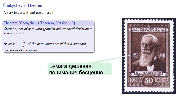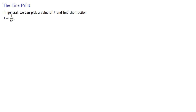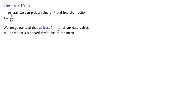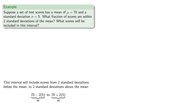In general, we can pick a value of k and find the fraction 1 minus 1 over k squared. Then Chebyshev's theorem guarantees that at least this fraction of our data values will be within k standard deviations of the mean. We might have more data values in this interval — we will never have less. That is an absolute guarantee.